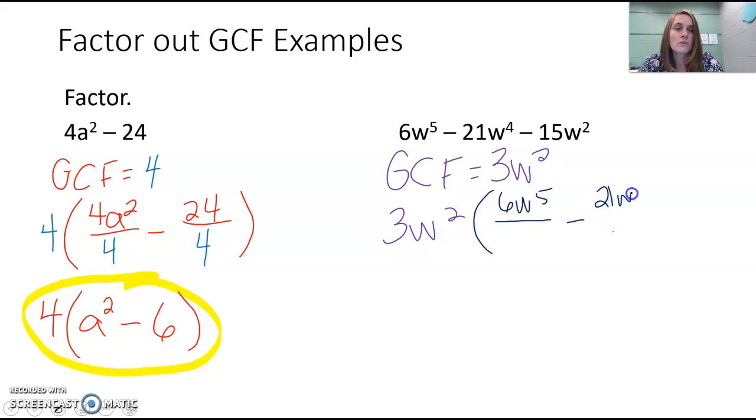Minus 21w to the 4th and divide it from there, minus 15w squared and divide it from there. So I'm going to divide that common factor, 3w squared, from each of those.